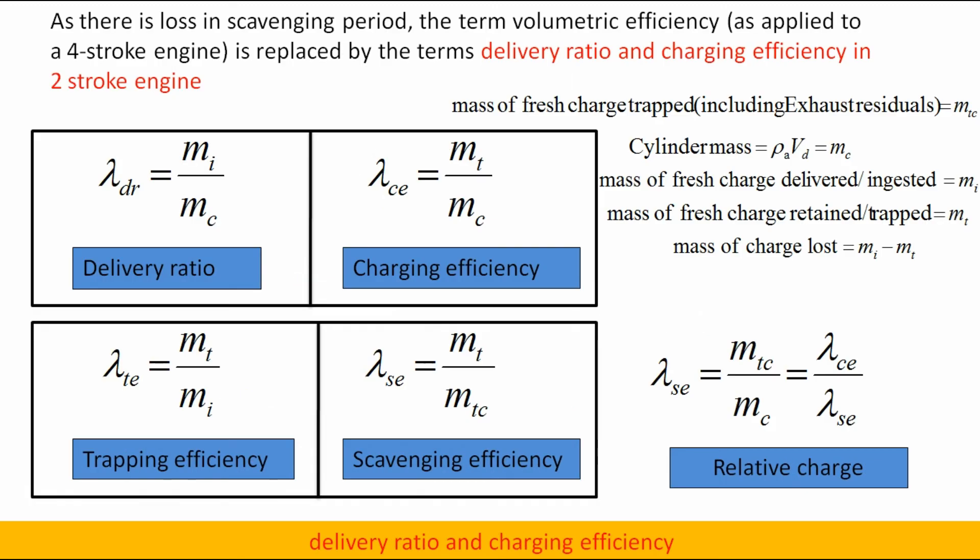Let us see delivery ratio and charging efficiency. As there is loss in the scavenging period, the term volumetric efficiency as applied to a 4-stroke engine is replaced by the terms delivery ratio and charging efficiency in the 2-stroke engine, whose formulas and definitions are shown below.